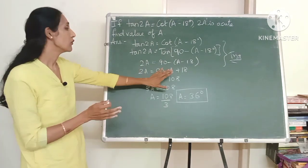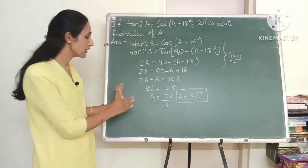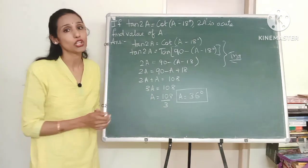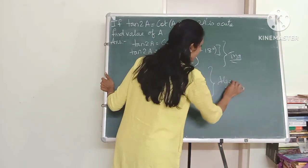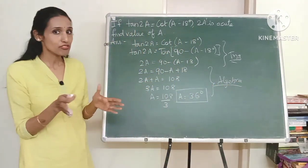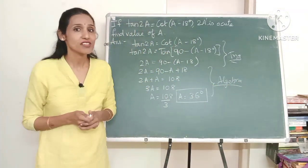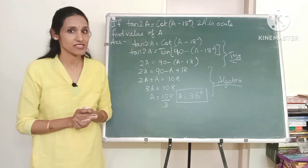There is algebra. See we are shifting the like terms together and solving and getting the value of A. So we need algebra concepts. So in this example apart from trigonometry which concept is being used? Algebra is being used.